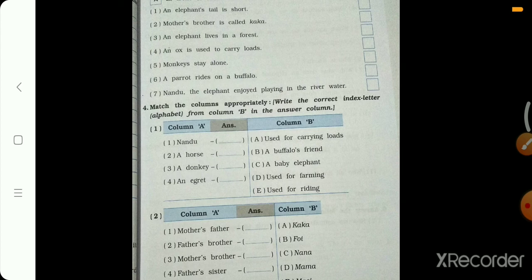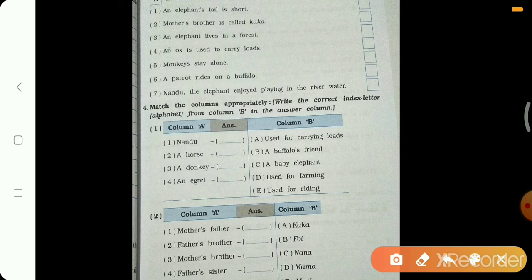A buffalo's friend. Kaun hai buffalo's friend? An egret. Egret. Jisse hum stork kehte hai. Woh nahi hota, bagula jisse bolte hai. Woh buffalo ke upar baithta hota hai. Egret, picture mein bhi aapne dikha tha, right? Toh B will match with the fourth one. Chalo, hum match karte jaate hai. First statement will match with this.